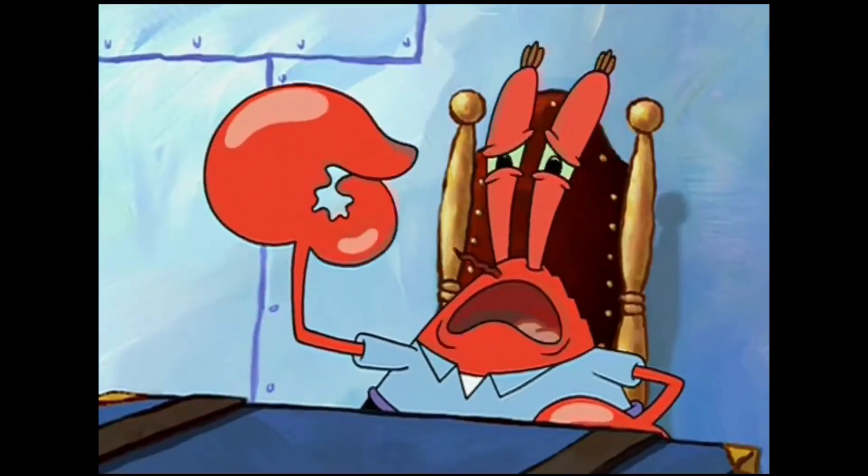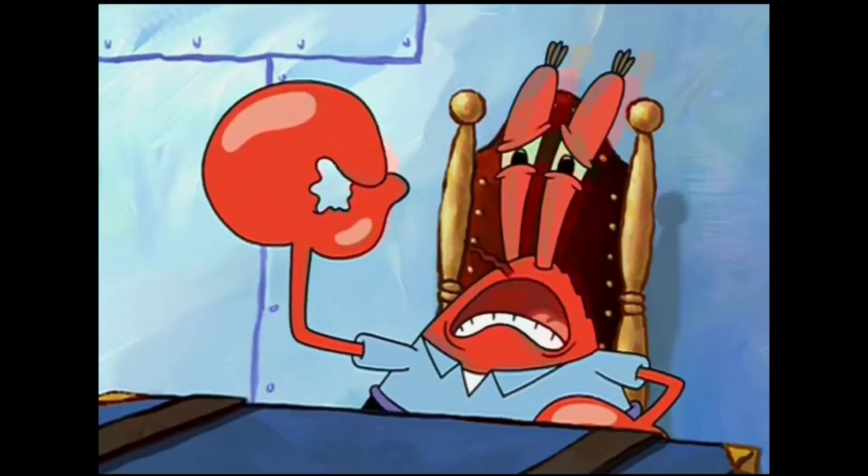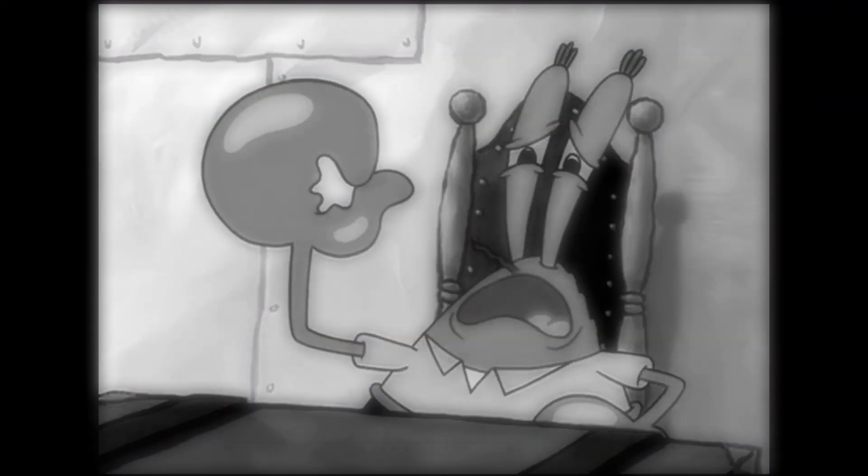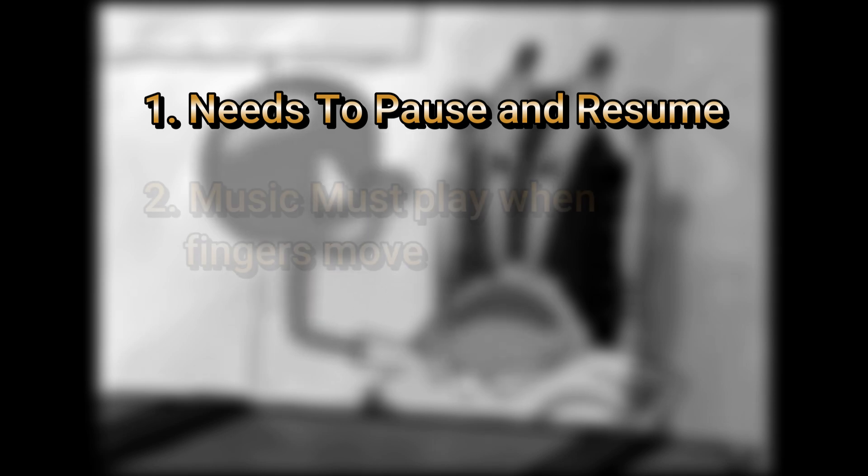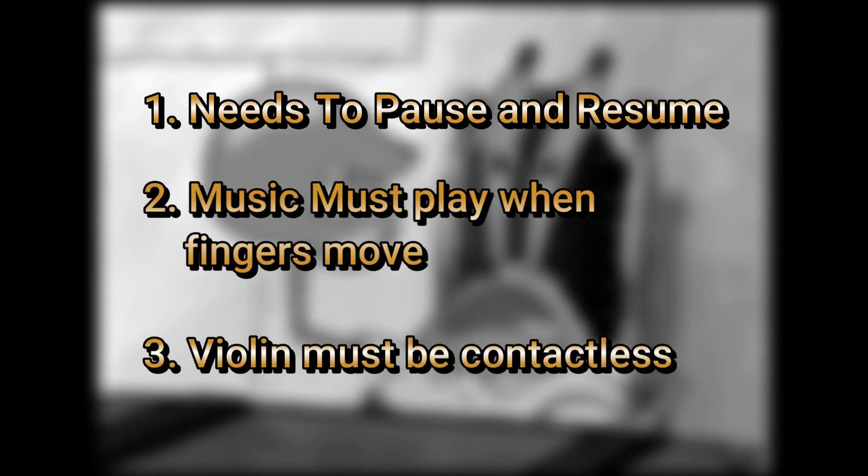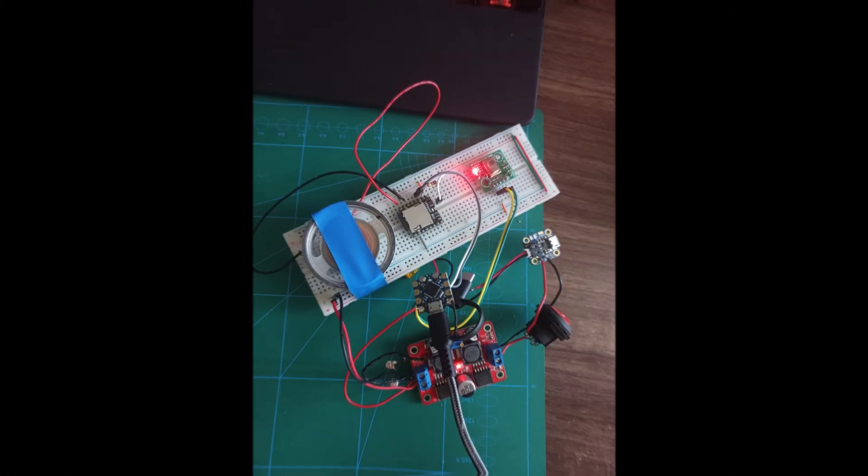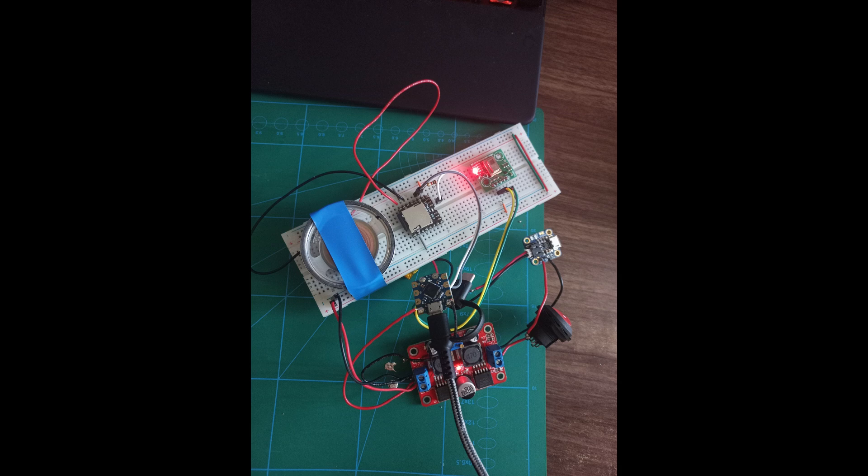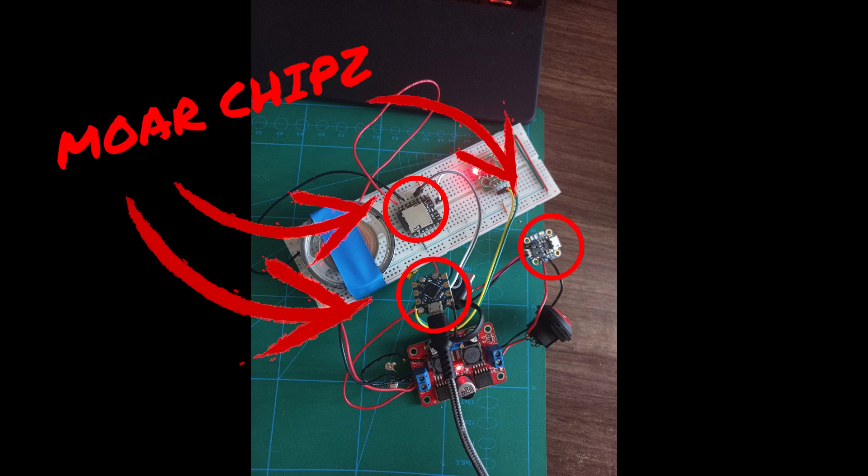To maintain the illusion of playing a tiny violin, our build needed to do at least these three things: one, music needs to pause and resume; two, music must play when your fingers move; and three, the violin needs to be contactless. And we've managed to do all three in the Mark II by practicing a timeless software engineering strategy—by making it hardware's problem.